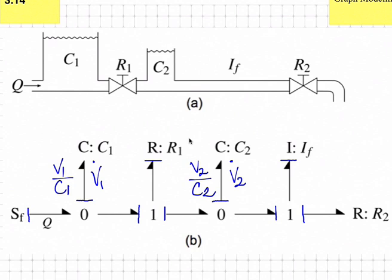For a pipe that has fluid in it, the momentum of that fluid generates kinetic energy. That momentum will be a state, and the time rate of change of that hydraulic momentum will be the pressure drop through the pipe due to accelerating the fluid. Gamma over IF will be the volumetric flow rate through the pipe. So now we've identified the efforts and flows on all our energy storing elements.